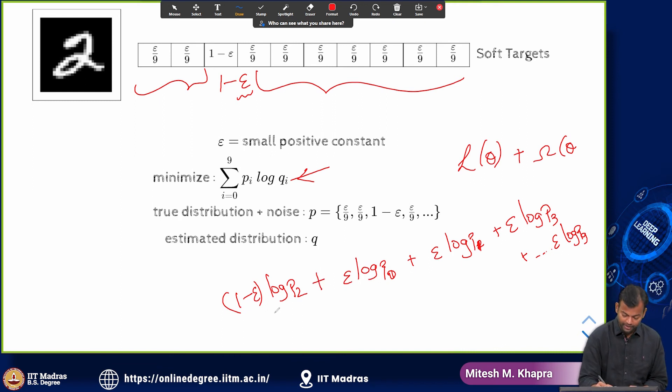Now you can again think of this, this was actually your true loss earlier without regularization. So you can think of this as L theta. So now you have some weighted L theta.